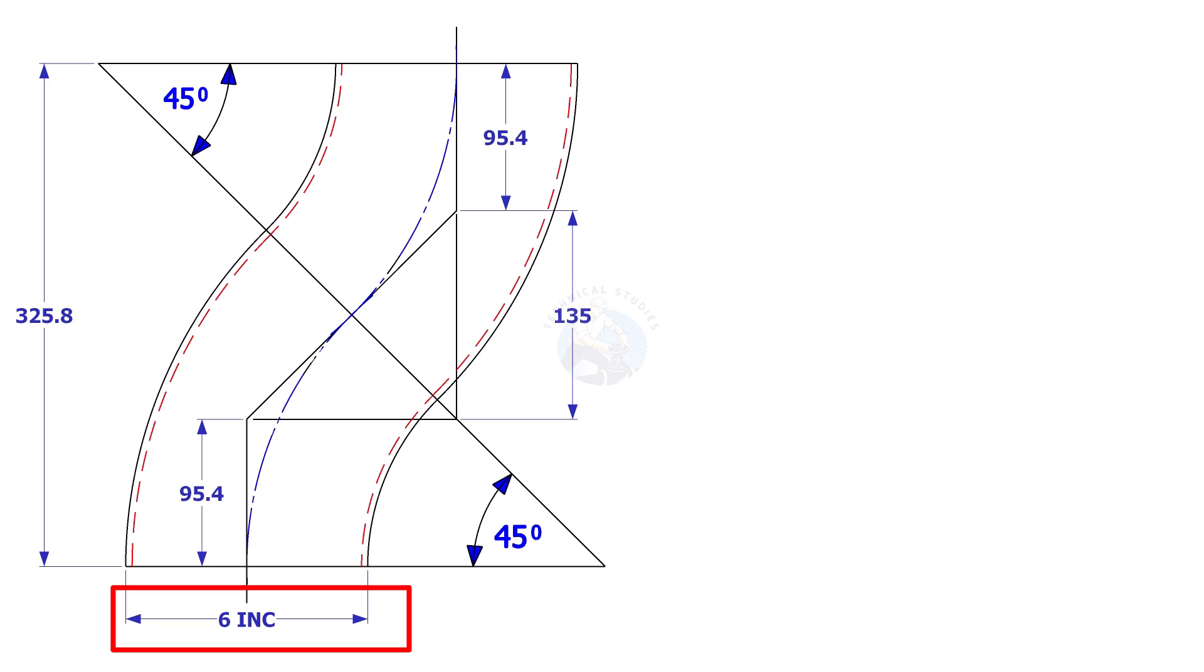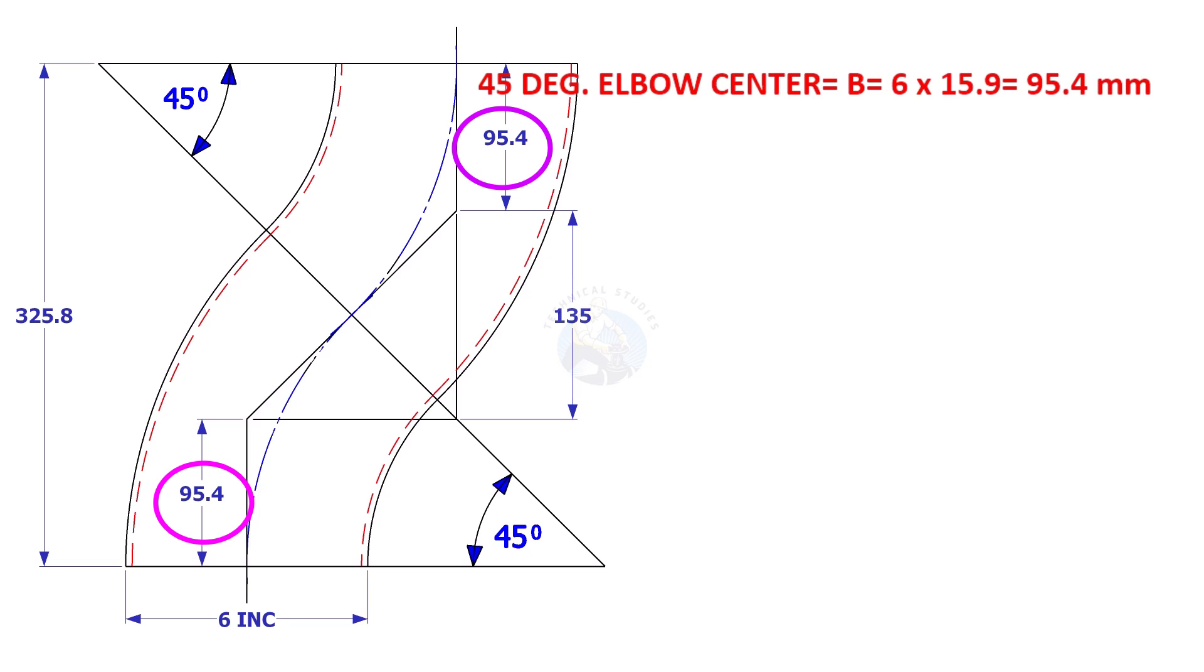In another example, the size of the elbow is 6 inch. 6 inch 45-degree elbow center is 6 multiplied by 15.9, is 95.4 millimeters.